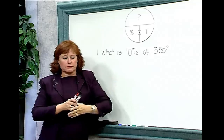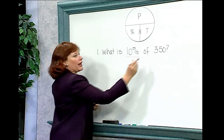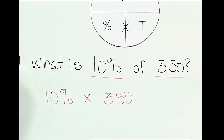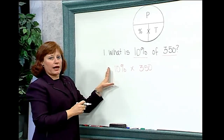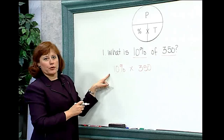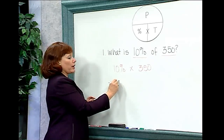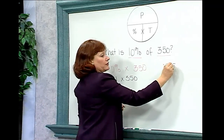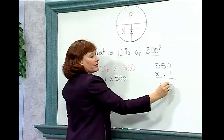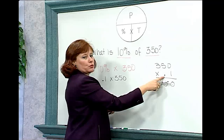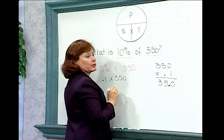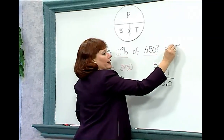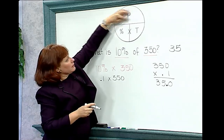I need to identify the percent — here it is — and the total. So for this problem I will take ten percent times the total, which is 350. I'll change ten percent to a decimal: ten percent is 0.1. So I have 0.1 times 350. Multiplying, I count in one decimal place from the right and place the decimal there. So what is ten percent of 350? The part is 35.